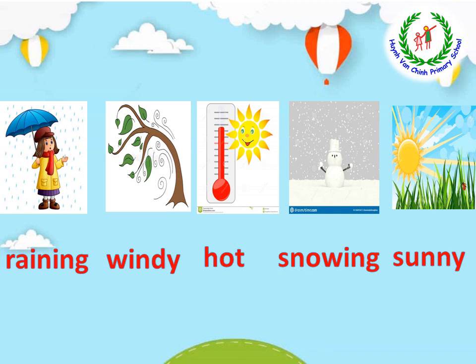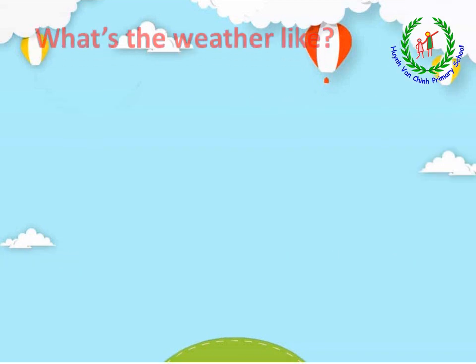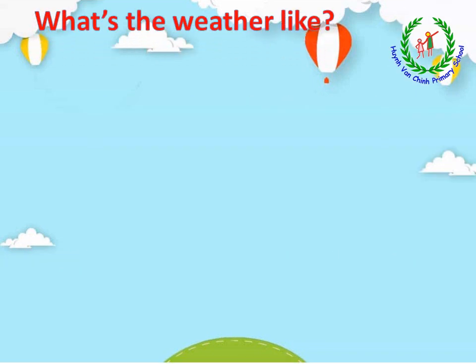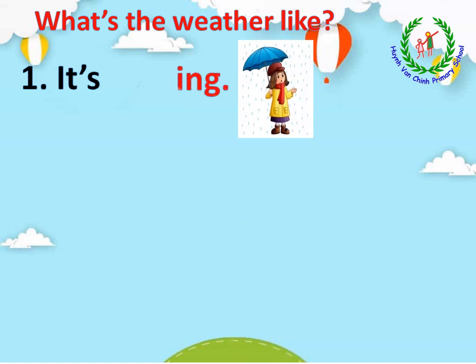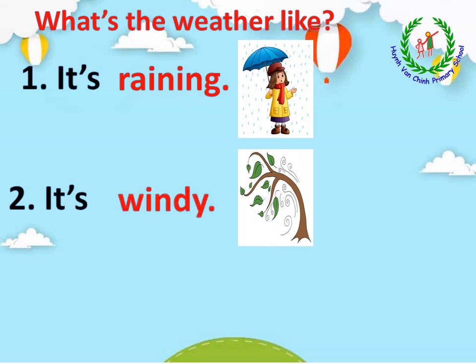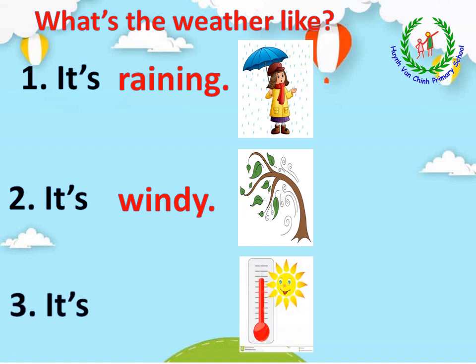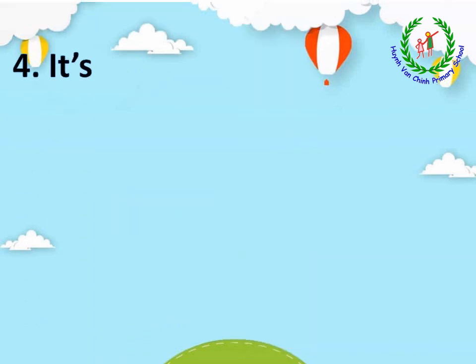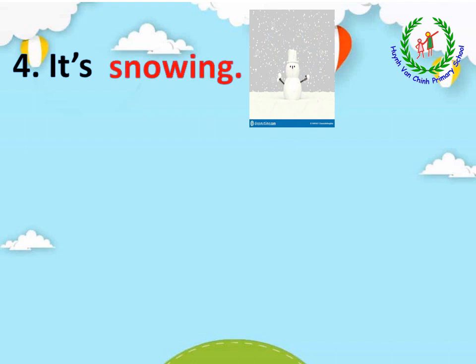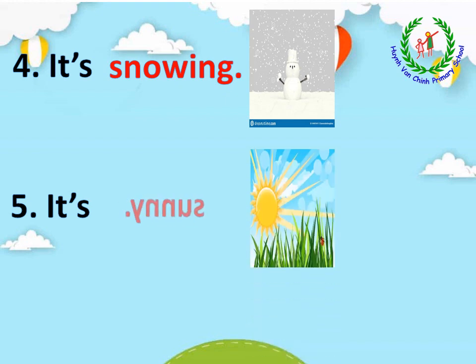Now move to the next part. Look at the picture and answer the question: what's the weather like? Number one is raining. Number two is windy. Number three is hot. Number four is snowing. Number five is snowing.